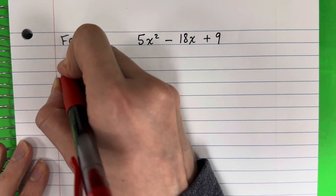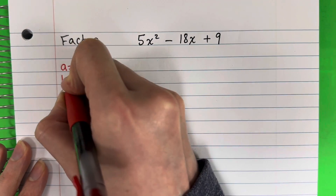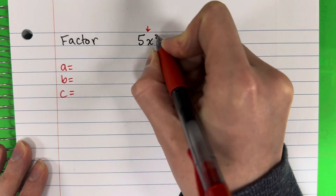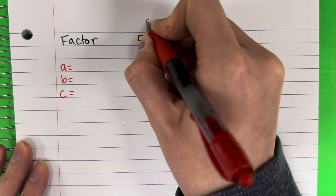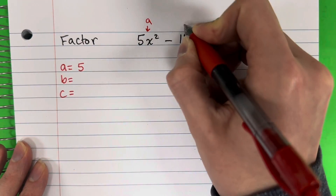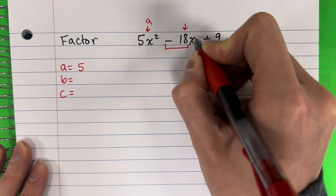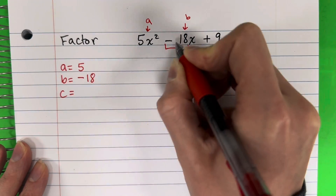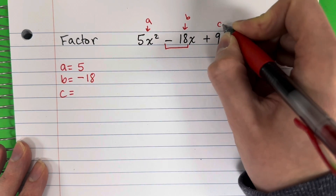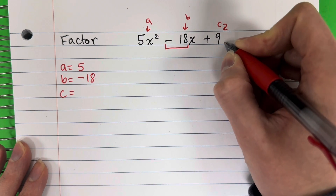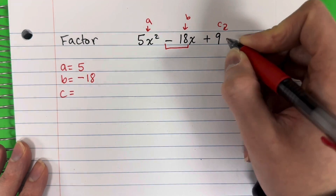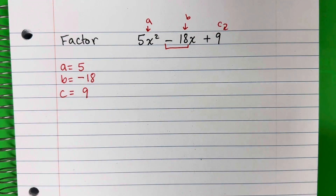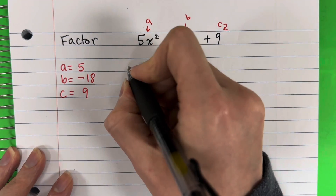Step one, we need to identify our A, B, C. A is the number with the variable squared, so that is 5. B is the number with the variable and no exponent, that is negative 18 — don't forget that negative. C is the number without a variable or exponent, so that is 9. After we identify our ABCs, we can now begin.